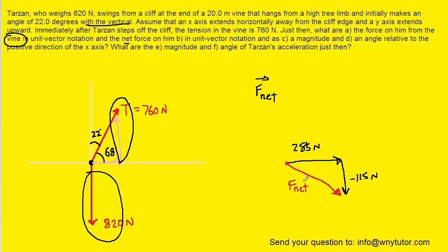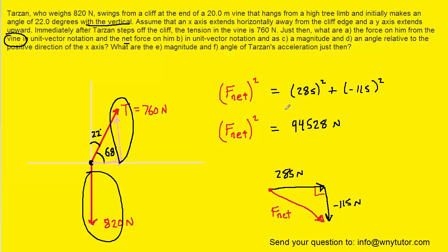And to find the value of F net we simply use the Pythagorean theorem. Because we have a right triangle we can do a squared plus b squared equals c squared. And then when we take the square root of both sides of this equation we can see that F net turns out to be approximately 307 newtons. So this would be the correct answer to part C of the question.